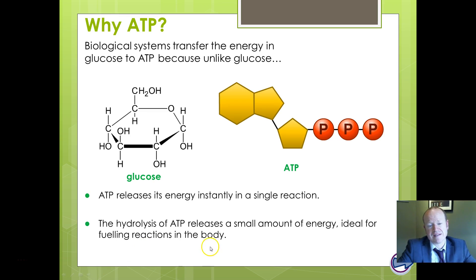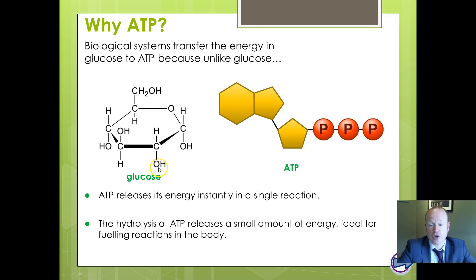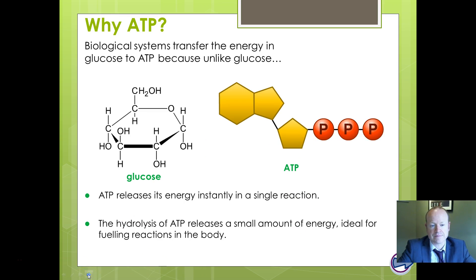ATP has ribose, adenine, and three phosphates. We hydrolyze it — in other words, if we add water to it — we release a phosphate group and release a certain amount of energy. So it's an energy storage currency. This is about small, controlled energy release. If we tried to burn glucose and use all of it, all of it would be given out straight away, so we've got to release energy in small amounts — this allows small packets of energy to be released.